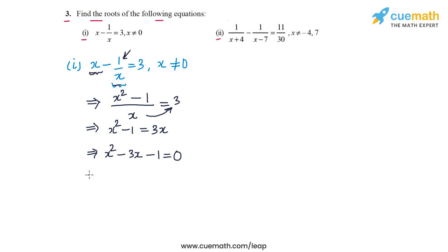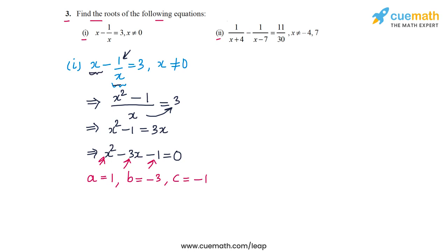Now this equation is in standard quadratic form with coefficients a = 1, b = -3, and c = -1, where a is the coefficient of x², b is the coefficient of x, and c is the constant term. We can now apply the quadratic formula to find the roots.